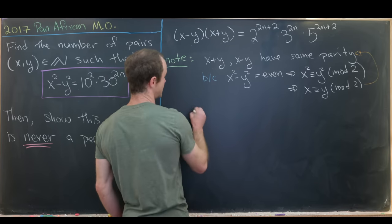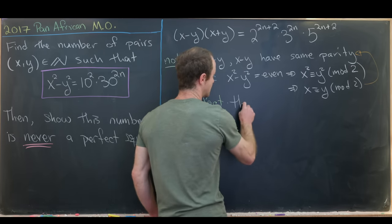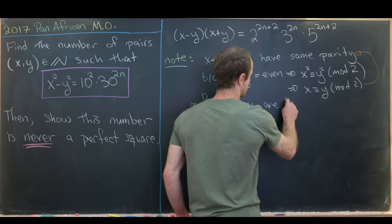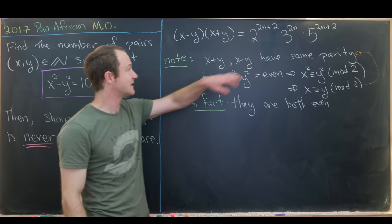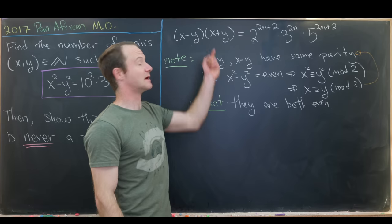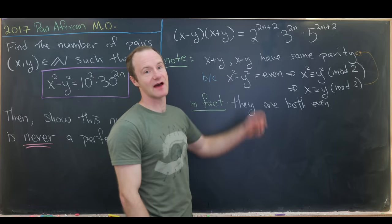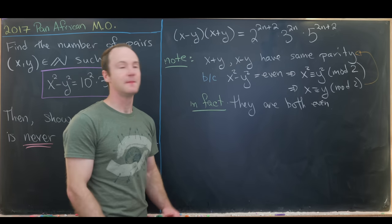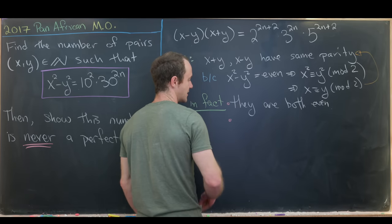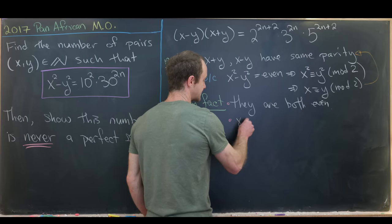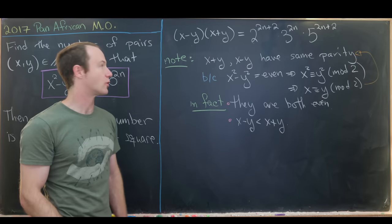So in fact, we know that both x minus y and x plus y are even. That's important because when splitting factors, each must have at least one factor of 2. We also note that x minus y is strictly less than x plus y, which will be important.